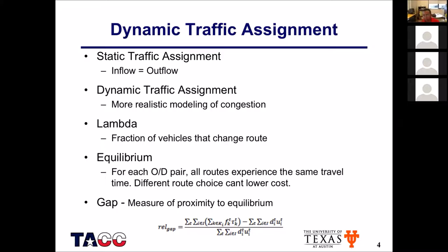A bit of background on dynamic traffic assignment versus static traffic assignment: static traffic assignment is a reduced model where a link's inflow is always equal to the outflow — a simplified model that doesn't represent a realistic model of congestion. Dynamic traffic assignment models it differently, breaking up a link into various cells, and each cell as it fills up affects the previous one in a queuing mechanism. DTA is much more compute-intensive but forms a more realistic model of how traffic behaves.